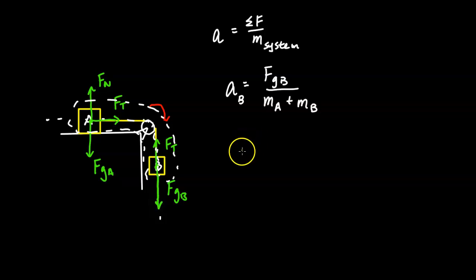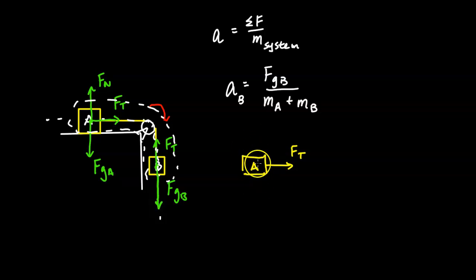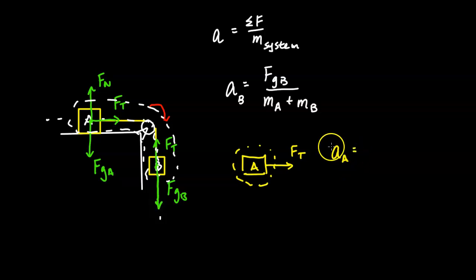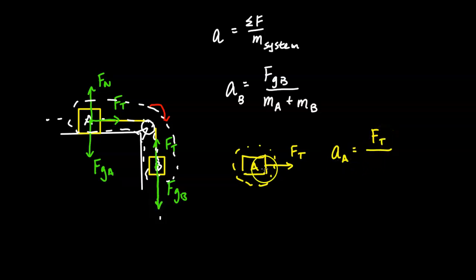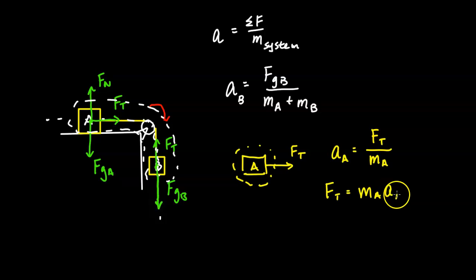To find the tension force, we isolate just object A. Object A horizontally has a tension force. The normal and gravitational forces cancel out, and it's accelerating horizontally. The acceleration of A, which equals the acceleration of B since they're connected by the string, equals the net force on A — which is just the tension force — divided by the mass of A. So to find FT, it's the mass of A times the acceleration of A, which we just calculated.